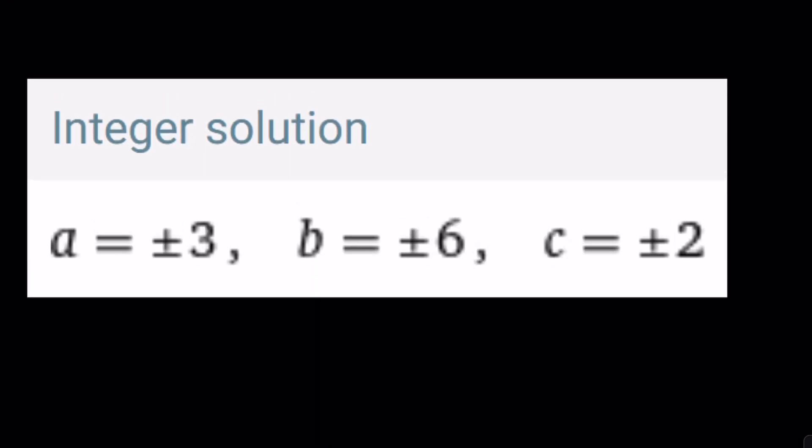Now, let's go ahead and take a look at the results from Wolfram Alpha. And we'll compare our results. And as you see here, the integer solutions are A equals plus minus 3, B equals plus minus 6, and C equals plus minus 2.